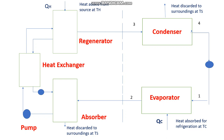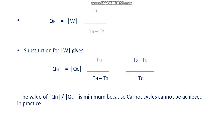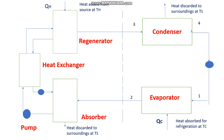From this we can write the equations: qh = w × [Th / (Th − Ts)]. Substituting for w gives: qh = qc × [Th / (Th − Ts)] × [(Ts − Tc) / Tc]. This value of qh / qc is a minimum because Carnot cycles cannot be achieved in practice. Using these equations we can evaluate qh and qc for the absorption refrigeration system.